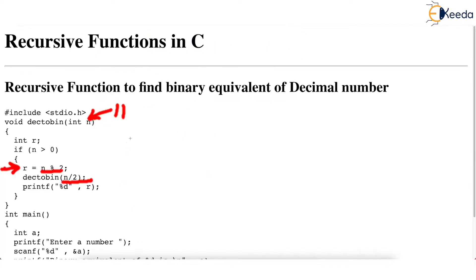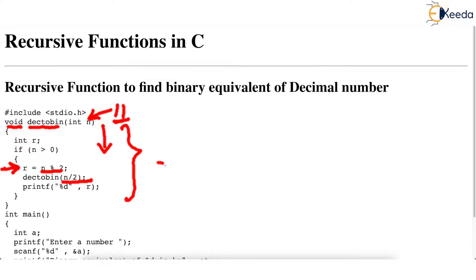Coming back to this recursive function — how does it work? This recursive function dec_to_bin is defined as void, so it is not going to return any value back to main. This is the first time we are designing a recursive function that does not return a value, so you will see there is no return statement in the code. Also observe that this function has an if statement to check the base case.